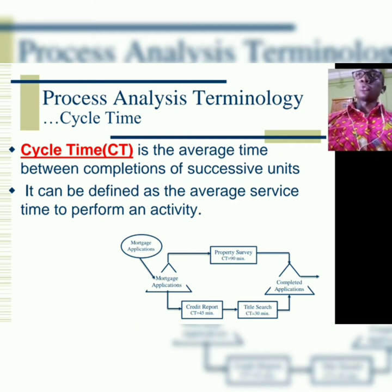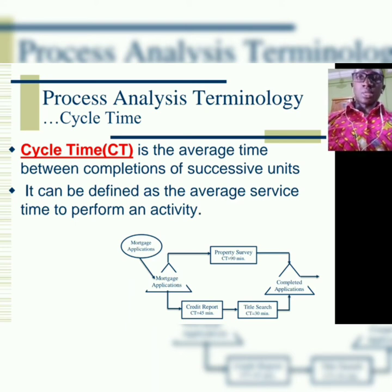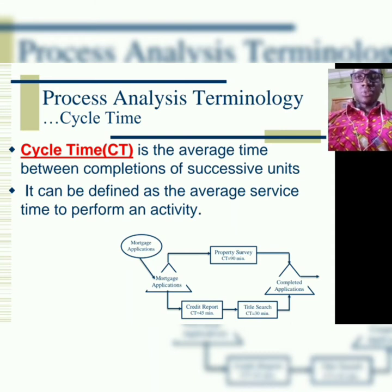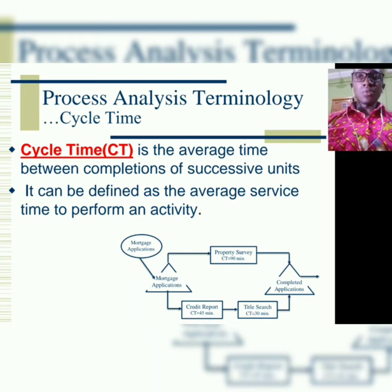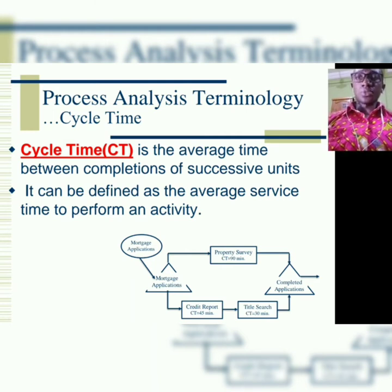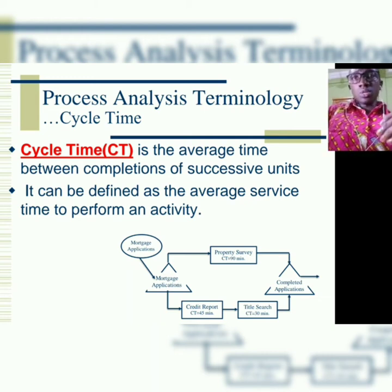What is the average time to prepare Oko Steel? What is the average time to cook rice? Those are what we call cycle times. If you look at our diagram, we can see property survey with a cycle time of 90, title search with a cycle time of 30 minutes, and credit report with a cycle time of 45 minutes — all given in minutes. Those are the average times to perform those activities.